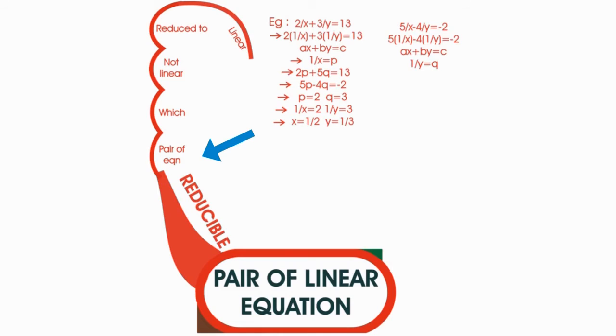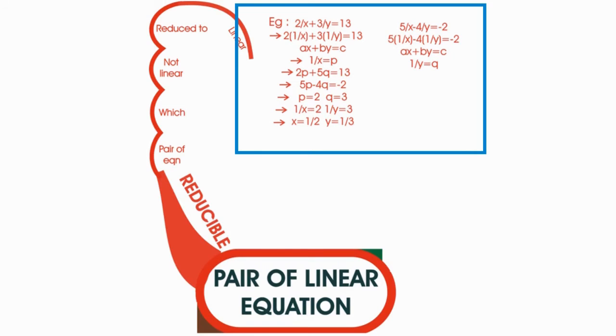Let us see by taking an example. Here, 2 divided by x plus 3 divided by y equals 13 is not a linear equation, but we reduce it to linear equation by taking 1 by x equals p, 1 by y equals q. After substituting p and q in place of 1 by x and 1 by y,